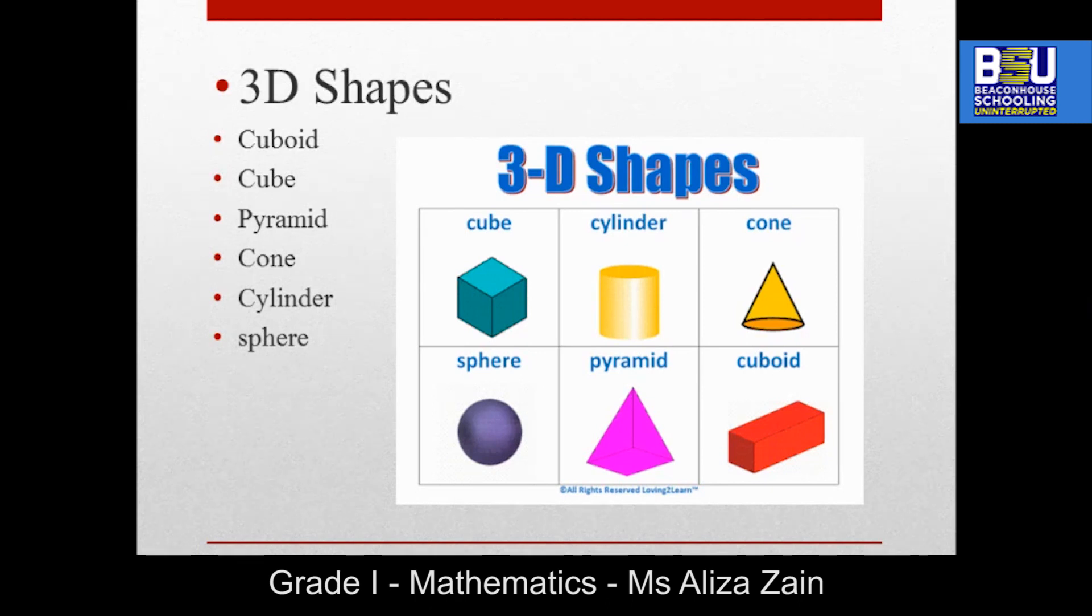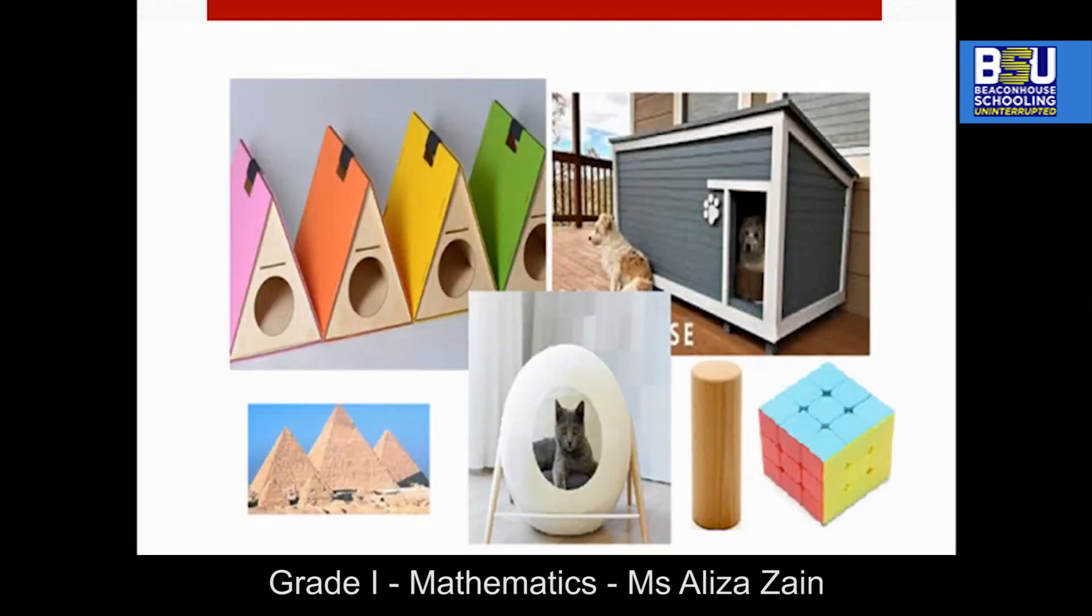Before showing you the next slide, I would like to ask you one thing, students. How many of you have pets at home? Could you tell me what kind of home they have? Now let's look at this. Maybe they have a home like this cat—look at this sphere-shaped cat house—and what about this cuboid-shaped dog house? Wow, look at this triangular prism. As you can see, a few examples of 3D shapes on one page. Same as you can have so many examples of 3D shapes in your surrounding.